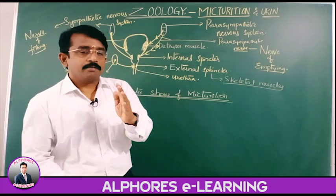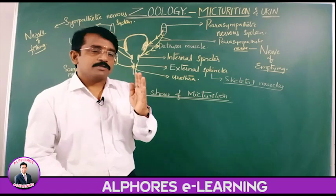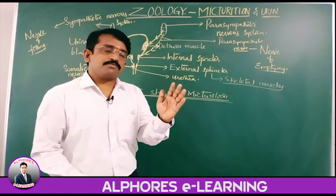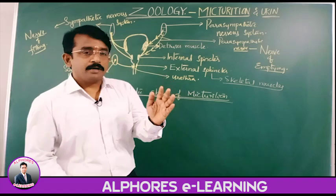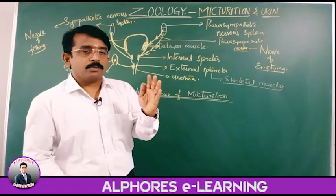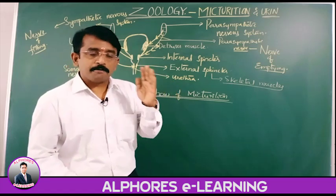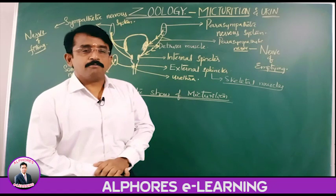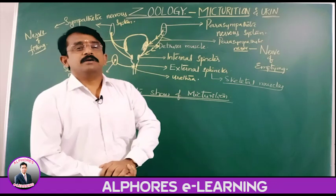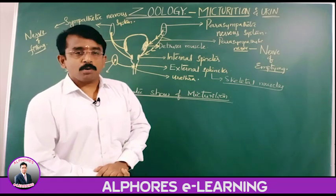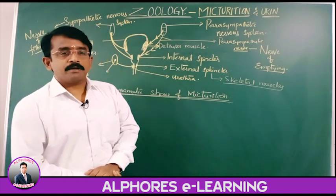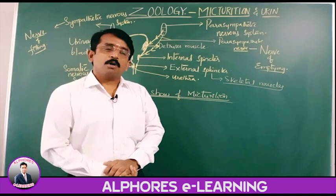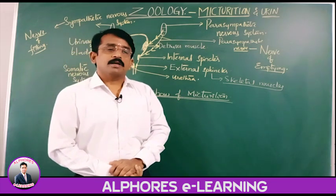We discussed the structure of kidneys, structure of nephron, and how urine formation takes place — involving glomerular filtration, selective reabsorption, and tubular secretion.